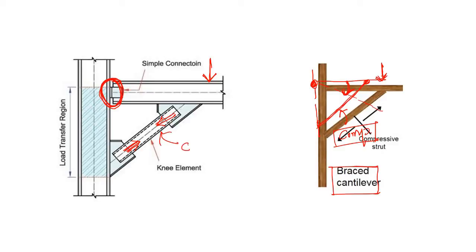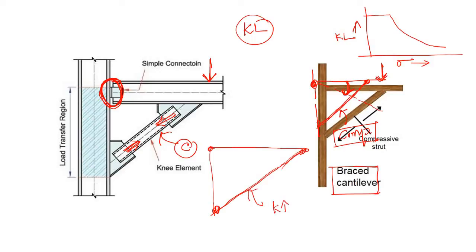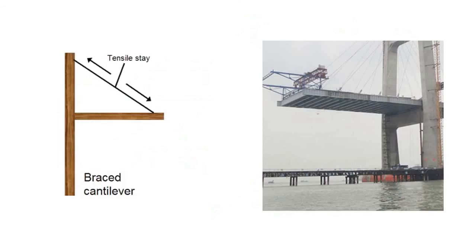Now, since this member is under compression, you know that the compressive load-carrying capacity of any member varies with its effective length kL. If we increase the effective length too much, the strength actually decreases. So here also we have a limitation: for a very long cantilever, a very long bracing member cannot be used efficiently because the increased effective length reduces the material strength.